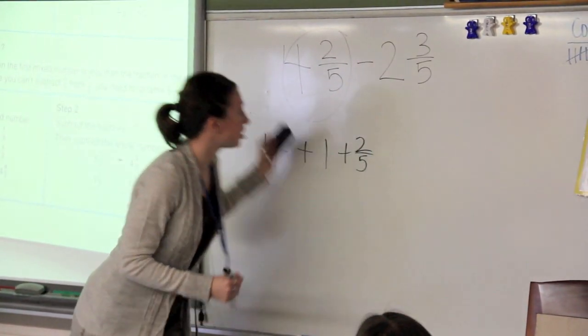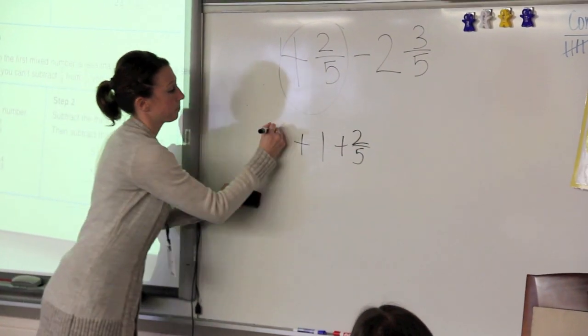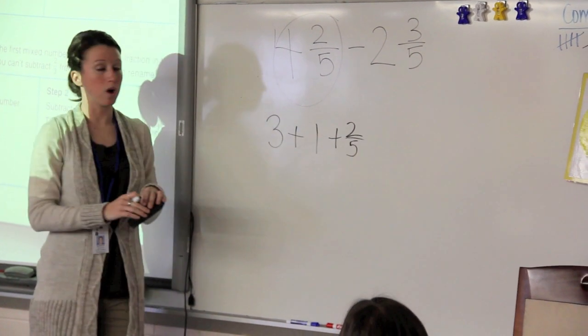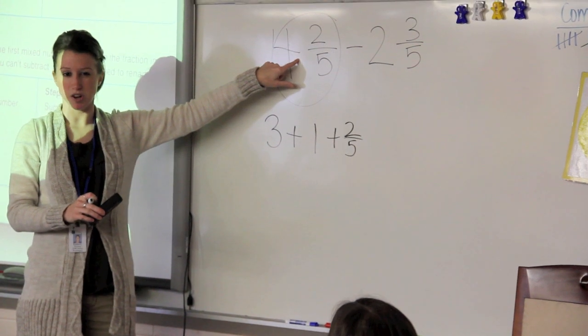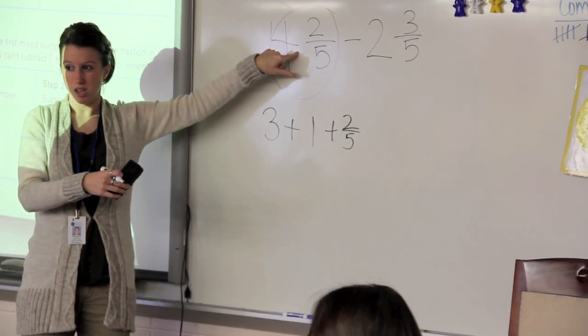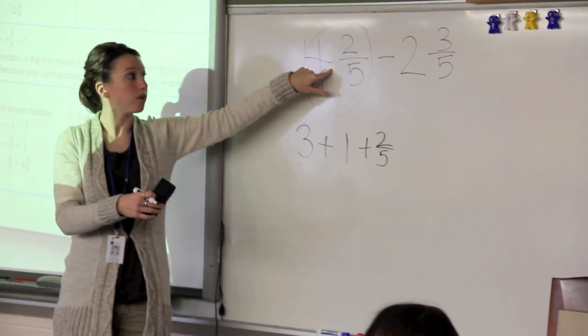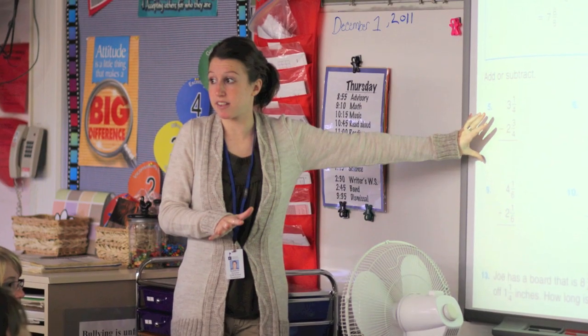So what I'm going to actually do is change it to 3 and add 1, right? Because that way it's the same thing as what I started with. We don't want to change the mixed number at all. It's still got to be equal to 4 and 2 fifths. So what is 1 equal to in this problem?